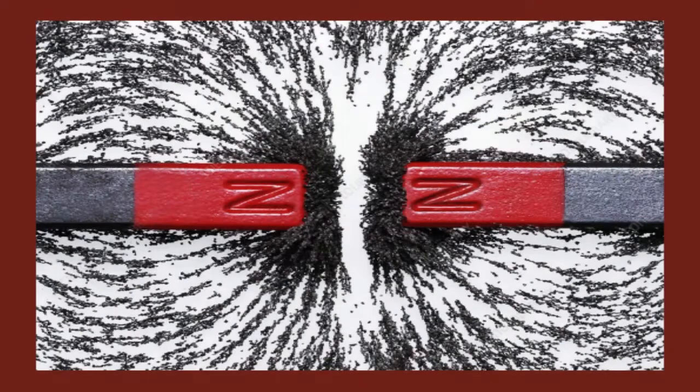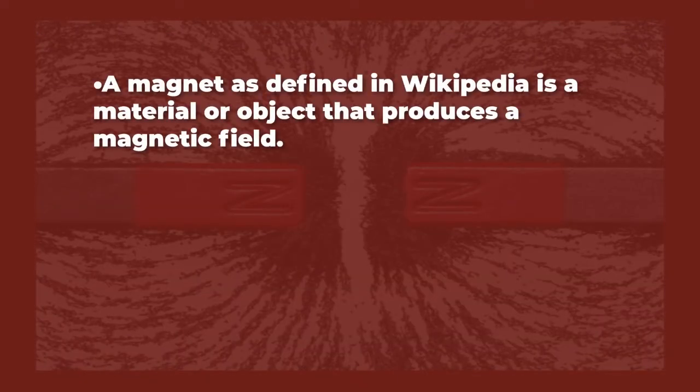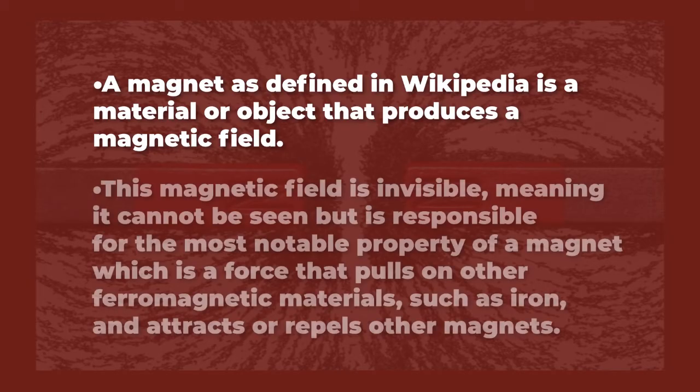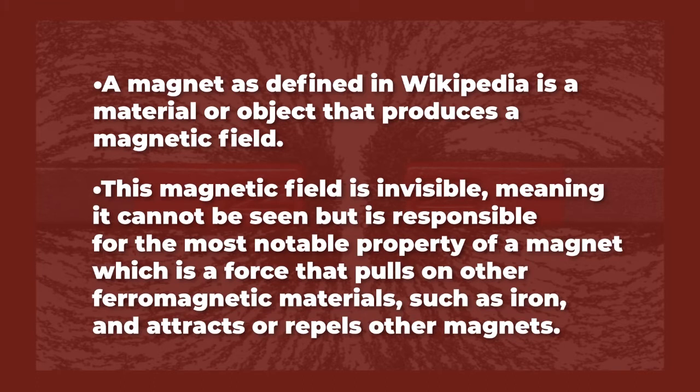A magnet, as defined in Wikipedia, is a material or object that produces a magnetic field. This magnetic field is invisible, meaning it cannot be seen, but is responsible for the most notable property of a magnet, which is a force that pulls on other ferromagnetic materials such as iron and attracts or repels other magnets.